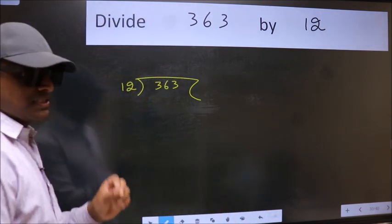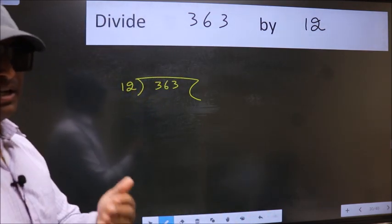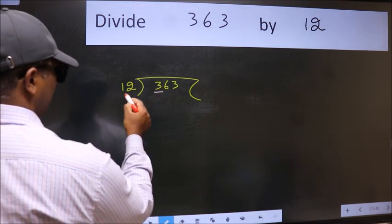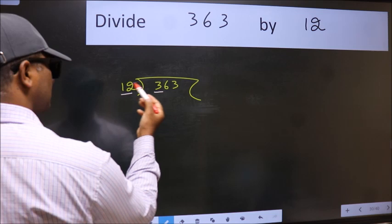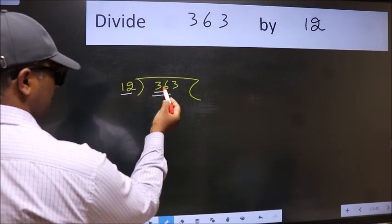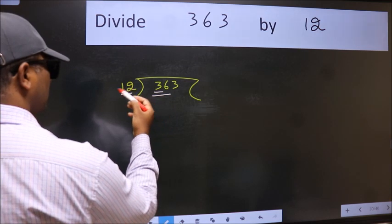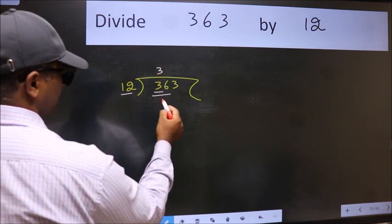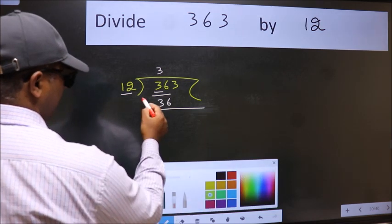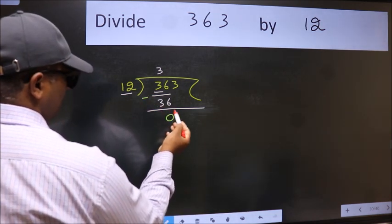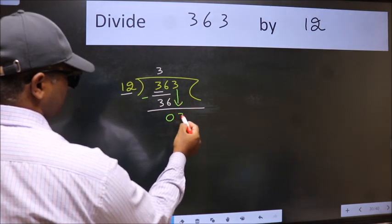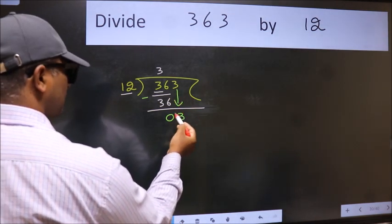This is your step 1. Next, here we have 3 and here 12. 3 is smaller than 12. So take two numbers, 36. When do we get 36 in 12 table? 12 times 3 is 36. Now we should subtract. We get 0. After this, bring down the beside number. So, 3 down. After this step,